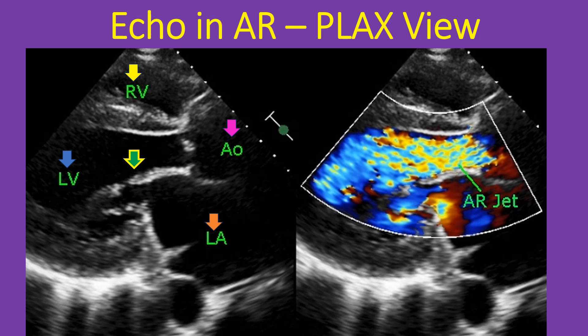Mitral valve leaflets seen in open position between the left ventricle and left atrium are thickened. The large aortic regurgitation jet can be seen as a mosaic jet in the left ventricular outflow tract, anterior to the anterior mitral leaflet. A portion of the thickened aortic valve can be seen between the aorta and the left ventricle. The AR jet is almost filling the left ventricular outflow tract and extends well into the left ventricle beyond the anterior mitral leaflet, indicating free aortic regurgitation.